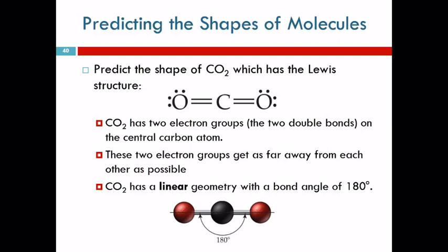So, let's look at carbon dioxide. To predict the shape using VSEPR theory, we need to have the Lewis structure. We've already gone over that, so I'm not going to take the time to draw all of these. Here's the Lewis structure for carbon dioxide.